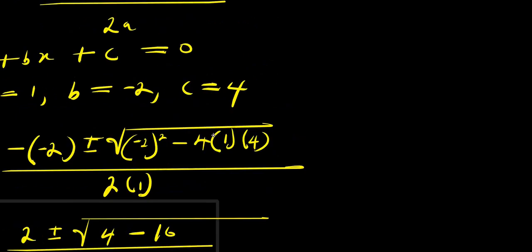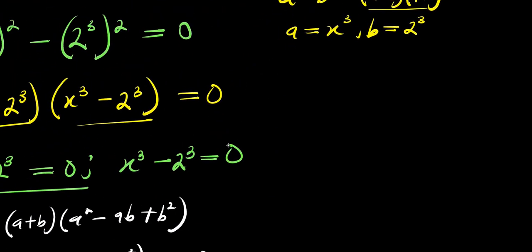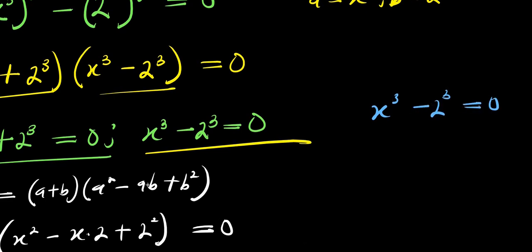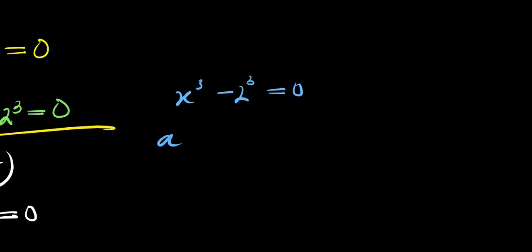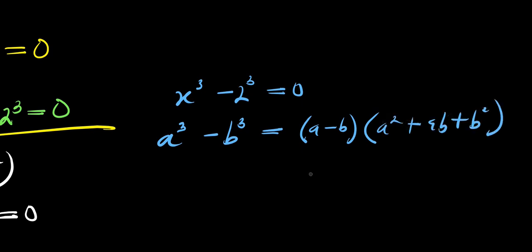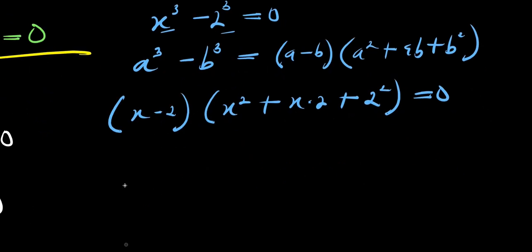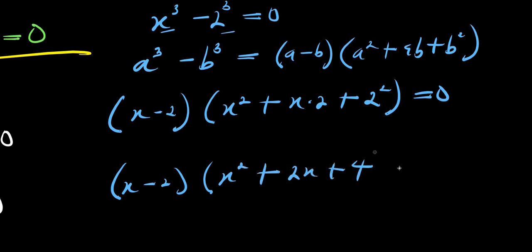Now let's get back to the other cubic equation: x power 3 minus 2 power 3 equals 0. We use the difference of cubes identity: a cubed minus b cubed equals a minus b times a squared plus ab plus b squared. With a equals x and b equals 2, we have x minus 2 times x squared plus 2x plus 4 equals 0.